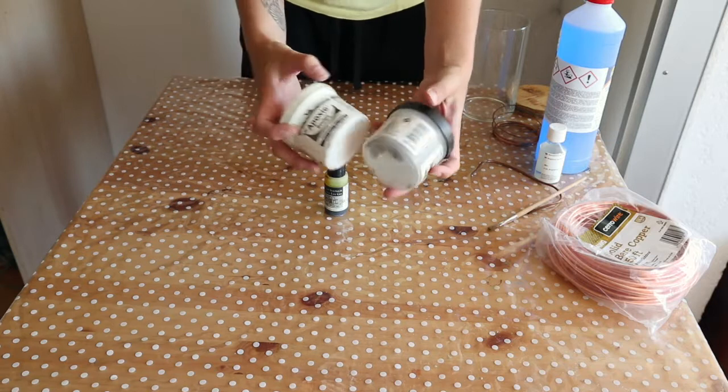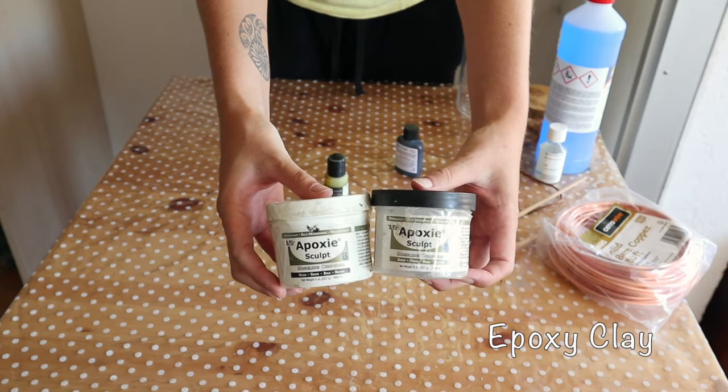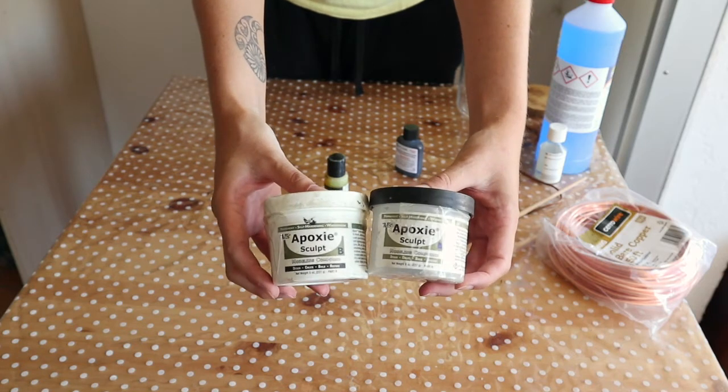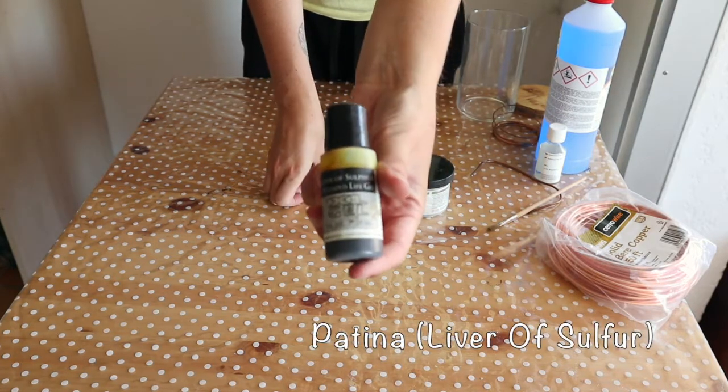I use a lot of epoxy clay to make my designs, especially when using crystals. Finally you can get liver of sulphur. It's a patina that would give your items an antique copper look.